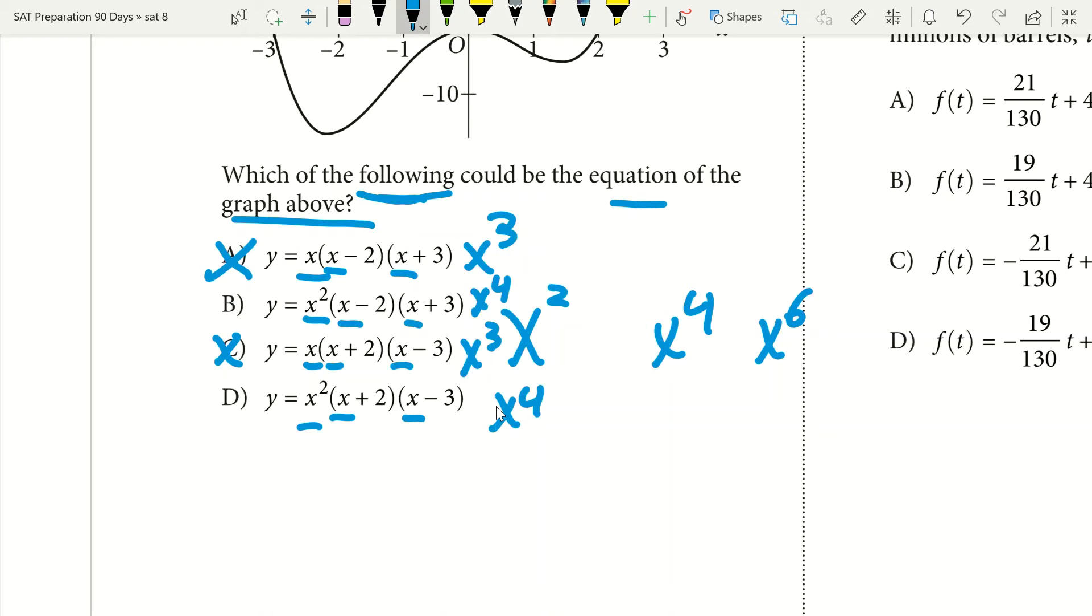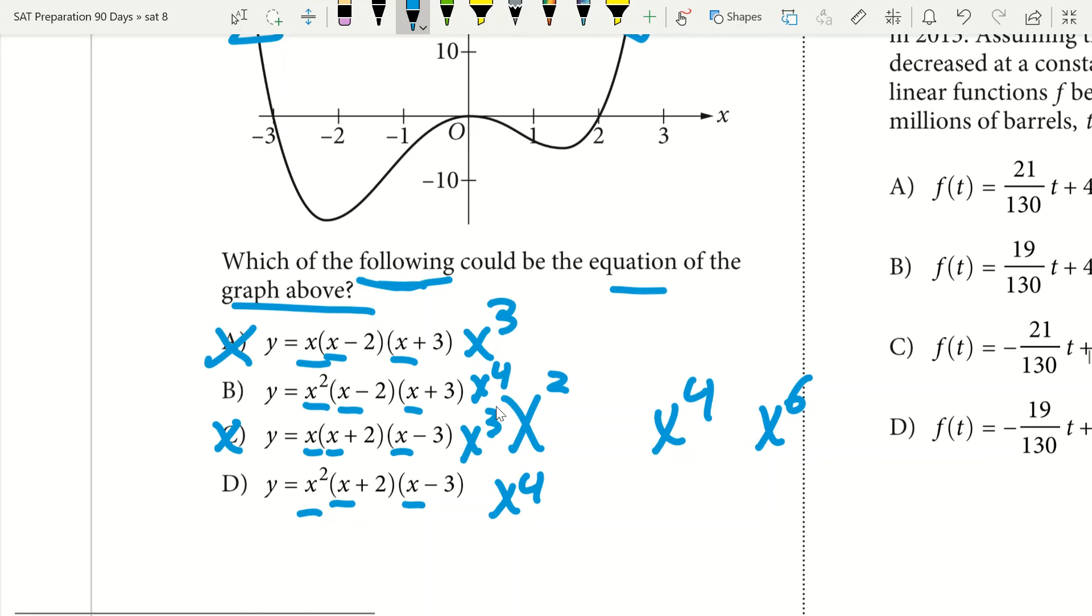The next thing I'm going to look at to get to my correct answer is where my roots are, where my zeros are. I see I have a zero here, a zero here, and a zero here. If I want two as one of my zeros, I need to have x minus two in my equation. Between B and D, I only have x minus two in answer choice B. Thus B has to be my correct answer.